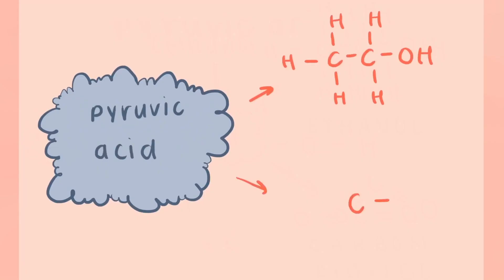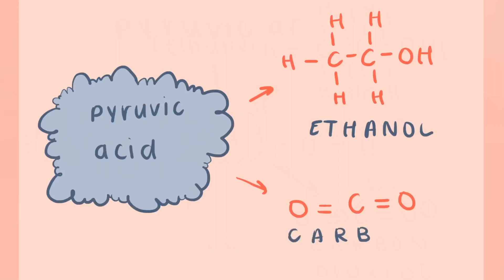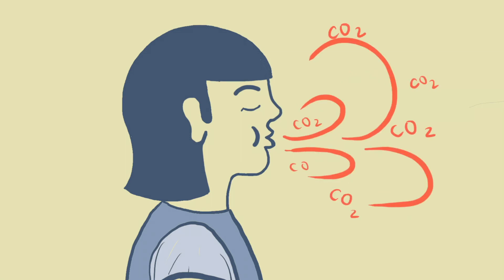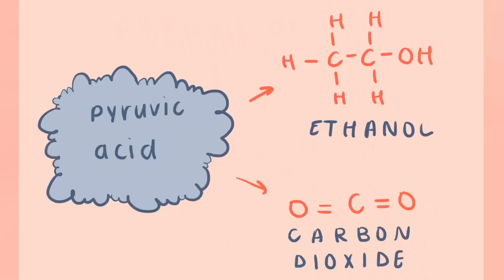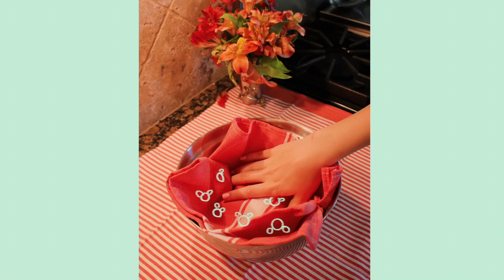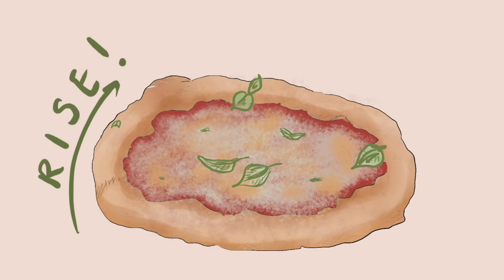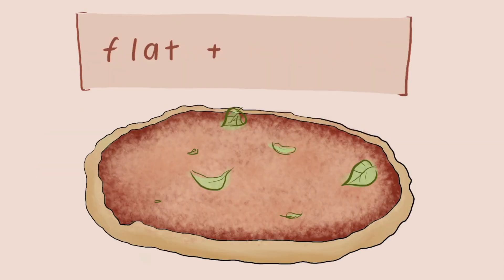During alcohol fermentation, pyruvic acid is converted into ethanol and CO2, or carbon dioxide, the same gas we breathe out. Those are the air bubbles you feel when you knead your dough after it's rested for a while. By converting the starches and sugars in bread to CO2, our dough gets filled with gas molecules, causing it to rise. Otherwise, our dough will be really flat and won't puff up like we want it to.